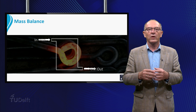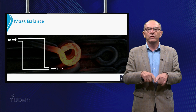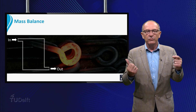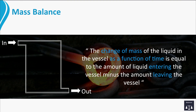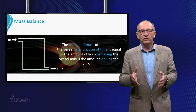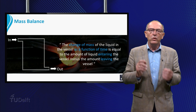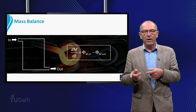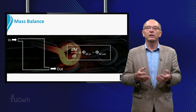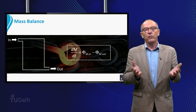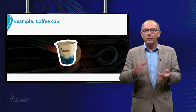Let's look at the last example. We draw a sketch of an industrial vessel where liquids flow in and out. A general mass balance can now be written as: the change of mass of the liquid in the vessel as a function of time is equal to the amount of liquid entering the vessel minus the amount leaving the vessel. To model this phenomenon we translate it into a formula. If the inflow and outflow are different, we can calculate if the liquid in the vessel increases or decreases. For example, how long does it take before a beaker of coffee is filled?